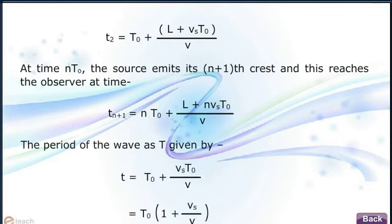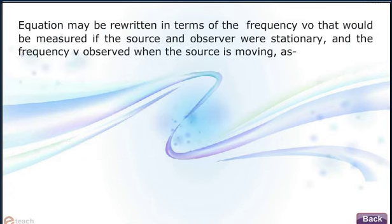The period of the wave is T given by T equals T0(1 plus Vs by v). The equation may be rewritten in terms of the frequency ν0 that would be measured if the source and observer were stationary, and the frequency ν observed when the source is moving.